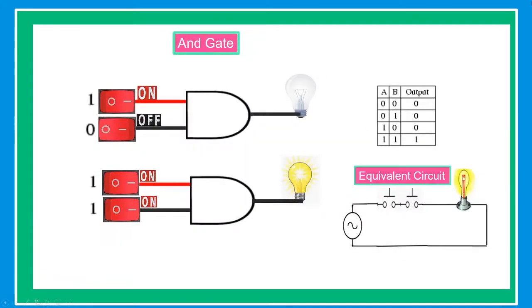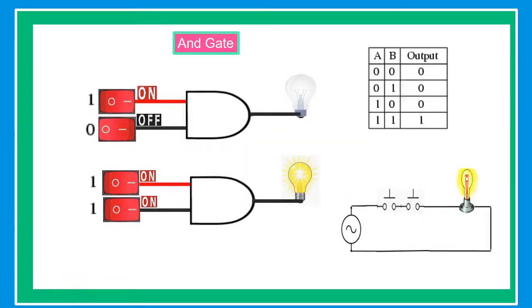Our next topic is the AND gate. The AND gate gives an output of one if both inputs are one. Otherwise, if one of the inputs is zero, it will give us an output of zero.